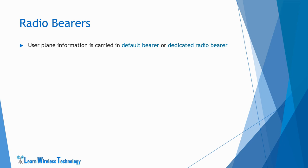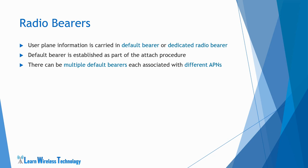User plane information is carried in a default bearer or dedicated radio bearer. The default bearer is established as part of the attach procedure, and there can be multiple default bearers established during multiple PDN connectivity procedures. Each default bearer will be associated with different APNs and have different purposes of usage. The bearer established during initial attach can be used for internet connectivity such as browsing or email. For sending or receiving MMS, an additional bearer can be established. Dedicated bearers are established during VoLTE calls.